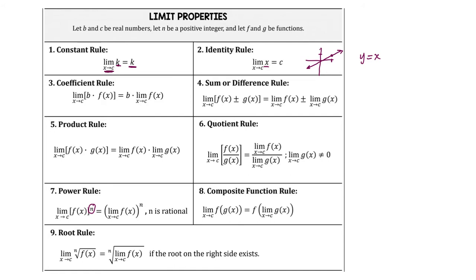Property 3 is telling you that if you have some constant value multiplied to your function, you can pull that constant b value out and rewrite this to be b times your limit. That can make your limit much easier to work with.